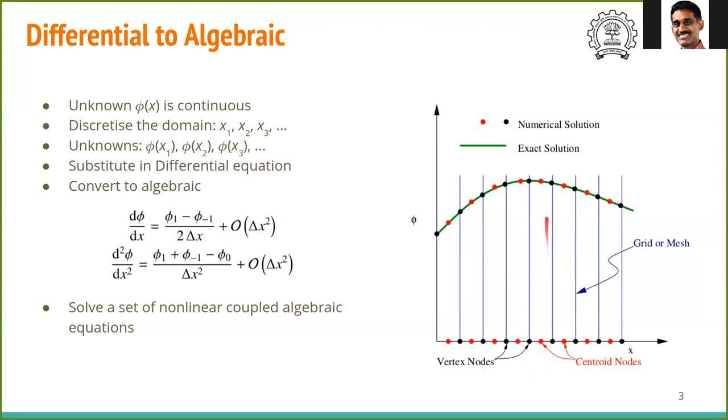If we need more accuracy, we simply increase the number of points. The process of converting a continuous function into a discrete set of point values is called discretization. This is the main domain from 0 to some length L, which is discretized into a finite number of points. Let the points be called as x1, x2, x3, and so on. These points are also called as mesh or grid points. In CFD terminology, the process of creating these points is called mesh generation or meshing.